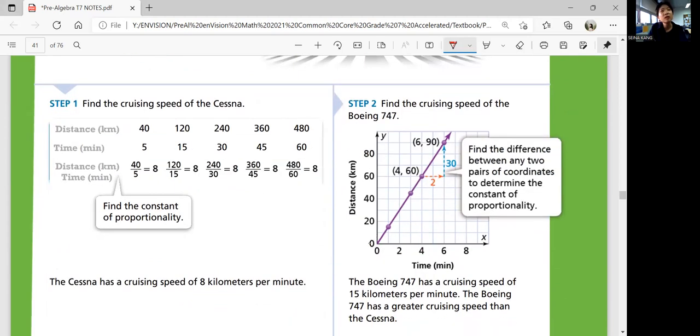So we're comparing Cessna's flight to this one. So 40 divided by 5 is 8. Why are we doing that? We want to find the unit rate. 40 kilometers per 5 minute means 8 kilometers per 1 minute.